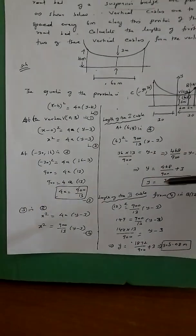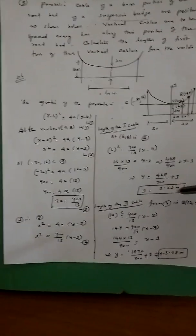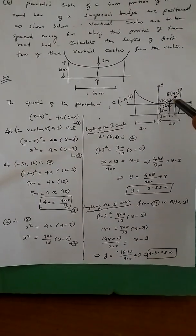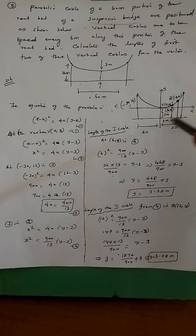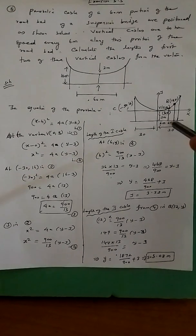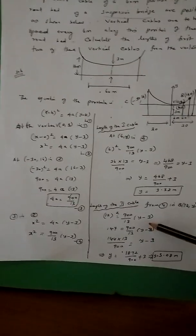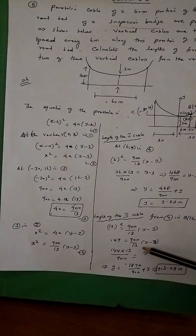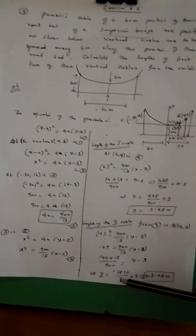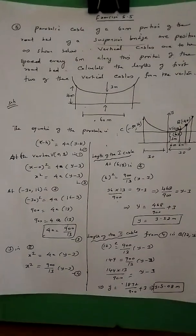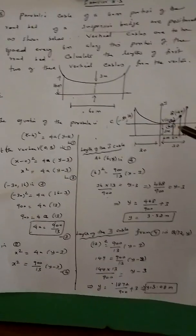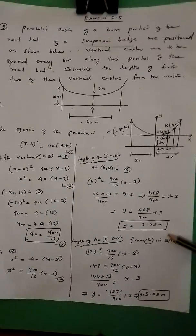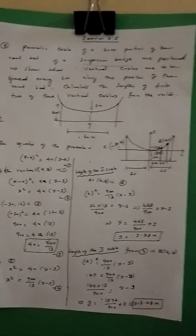Now we find the length of each cable. The length of the first cable is 3.52 meters. For the second cable, the base is the total of 12, and the length of the second cable is 5.08 meters.